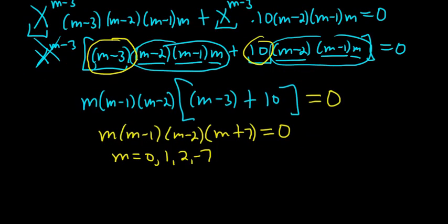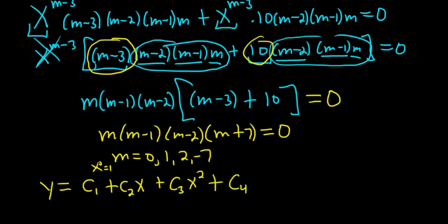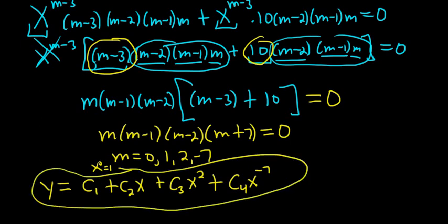So the final answer to this problem would be y equals c1 times x to the 0. But x to the 0 is 1, so I won't write it. Plus c2 times x to the 1, which is just x. Plus c3 times x squared. Plus c4 x to the negative 7. So that would be the final answer. And I hope that made sense.